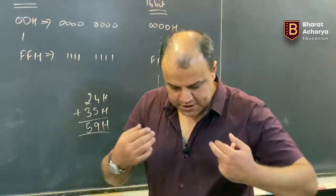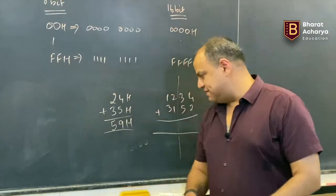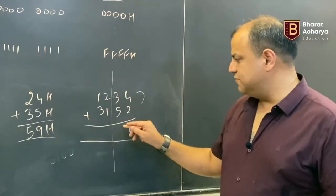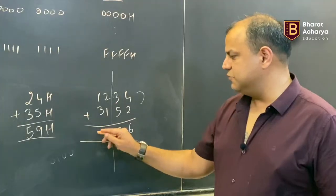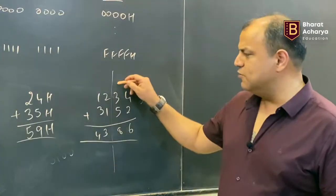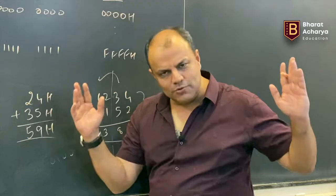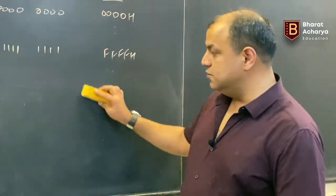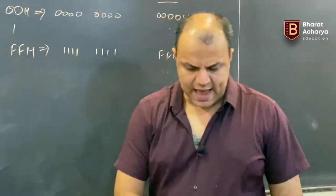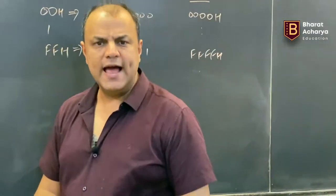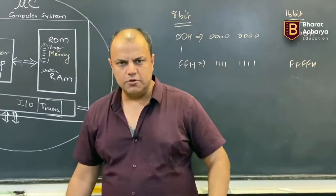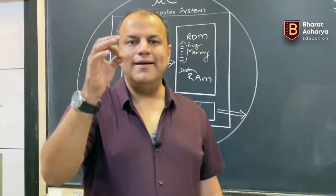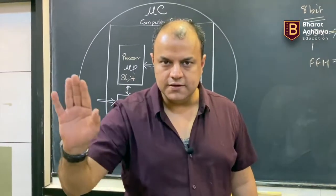The processor breaks 16-bit addition into two steps in a program. First it adds the lower bytes: 34 + 52. Then it adds the higher bytes: 12 + 31, taking the carry from the lower byte addition into account. Arithmetic and logic operations — ADD, SUBTRACT, MULTIPLY, DIVIDE, AND, OR, XOR — plus rotate and others in the full instruction set — are all 8-bit operations.